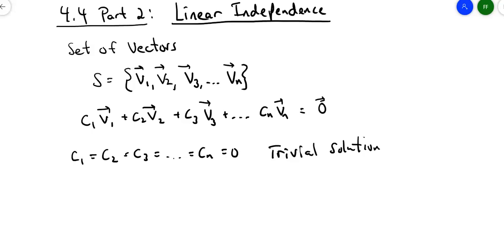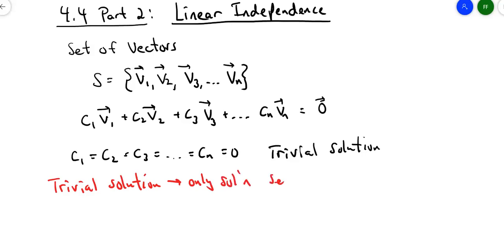Any solution beyond that is a non-trivial solution. So if you have the trivial solution and that's the only solution, then we say that that set of vectors is linearly independent. If the trivial solution is the only solution, then that set of vectors is linearly independent. What that means is I can't write any vector as a linear combination of any of the other vectors — it's not possible.